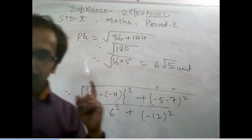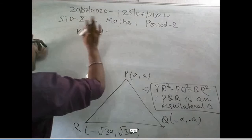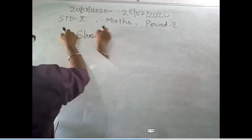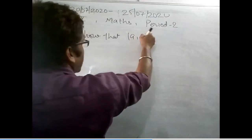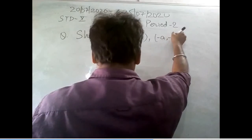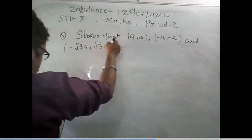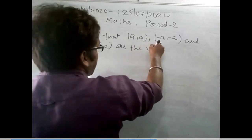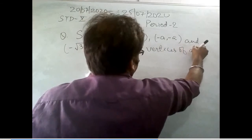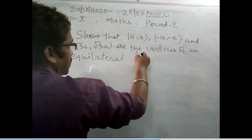Now one more question I have solved, I would like to show you that. The question is saying that: show that these points form the vertices of an equilateral triangle. These are the three points: A(a, a), B(-a, -a), and C(-√3·a, √3·a). So we have to show that they are the vertices of an equilateral triangle. Let us see how we can solve that.